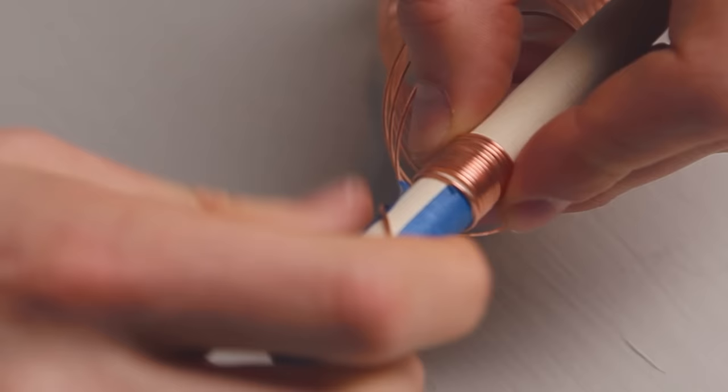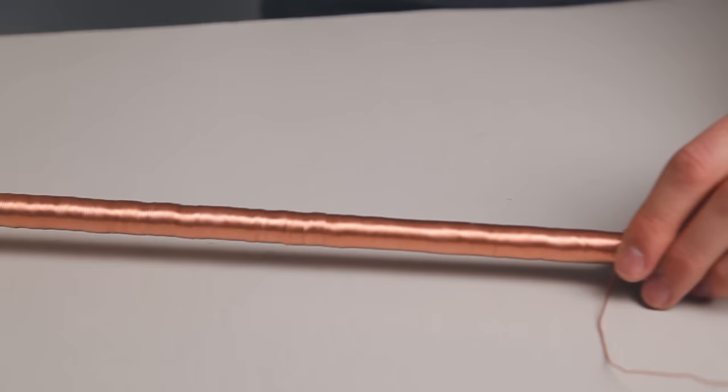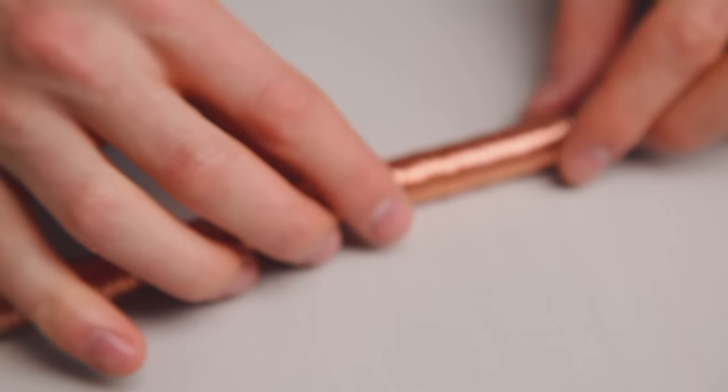Start by taping one end of your copper wire to your dowel, then spin your dowel to create a very tight coil of copper wire. Keep turning the dowel until you have at least four inches of tight copper coil.